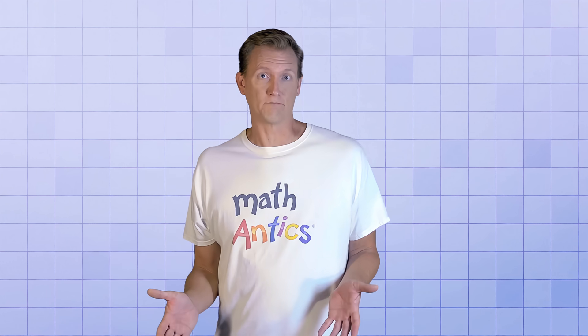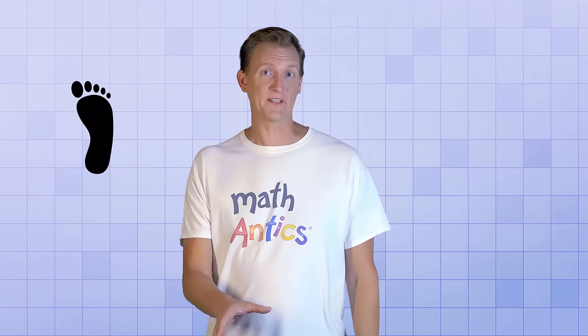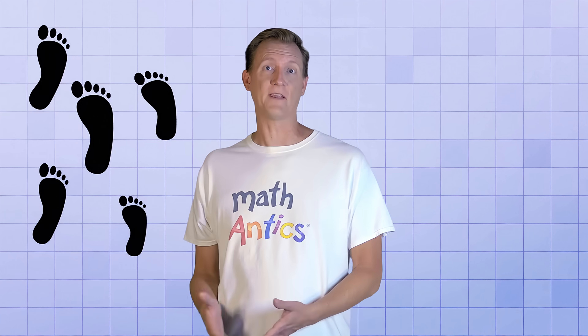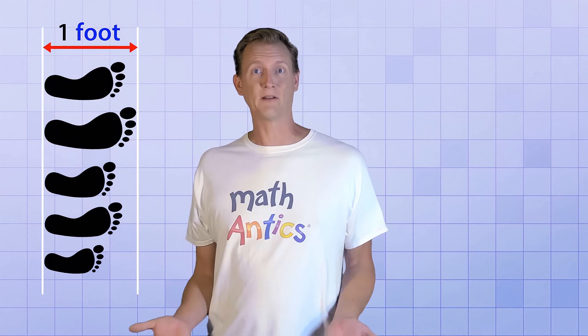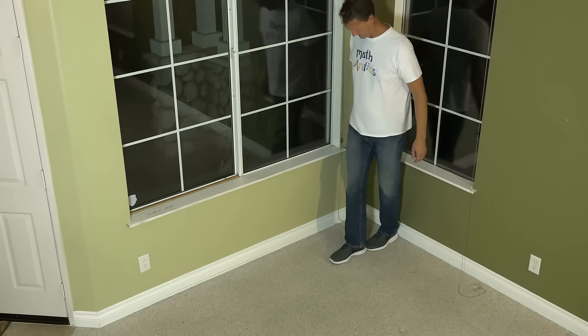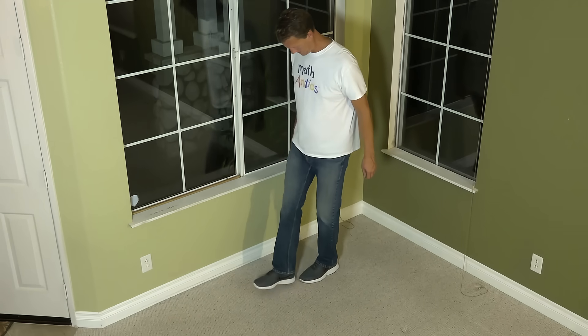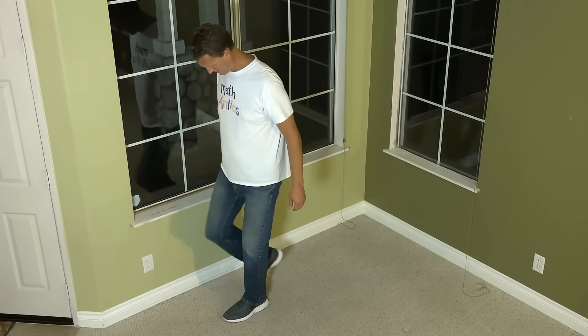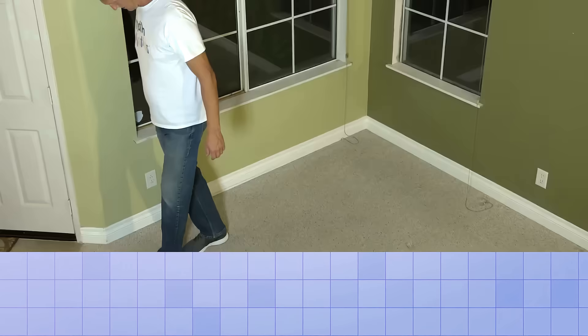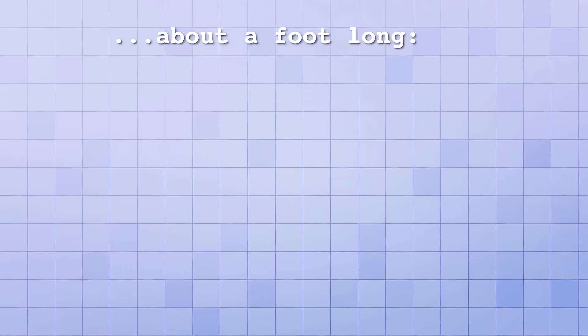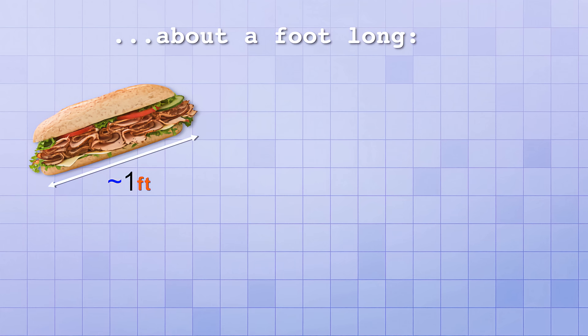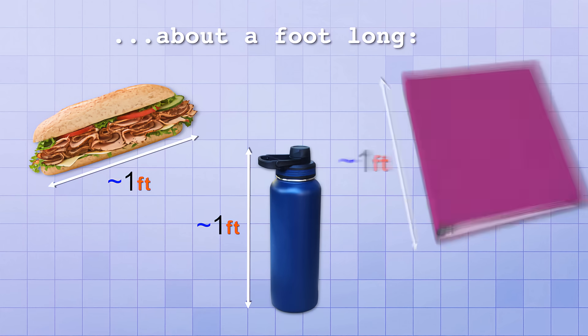Some familiar objects that are approximately a foot long are... well, your foot for one thing. Of course, different people have different sized feet, and most people have feet that are less than a foot long. But the length of the average shoe is a pretty good estimate for a foot. And that's why you'll sometimes see people walking off a distance heel to toe to estimate how many feet that distance is. Other things that are about a foot long are a foot-long sub-sandwich, a tall water bottle, or a three-ring binder.